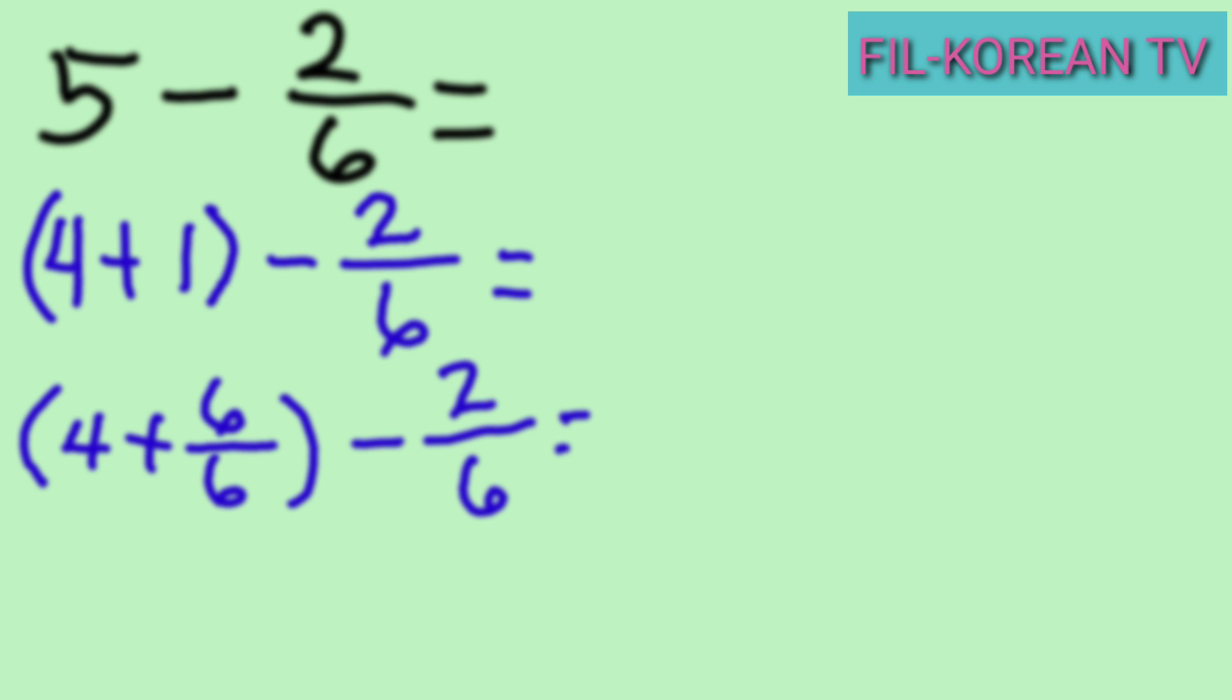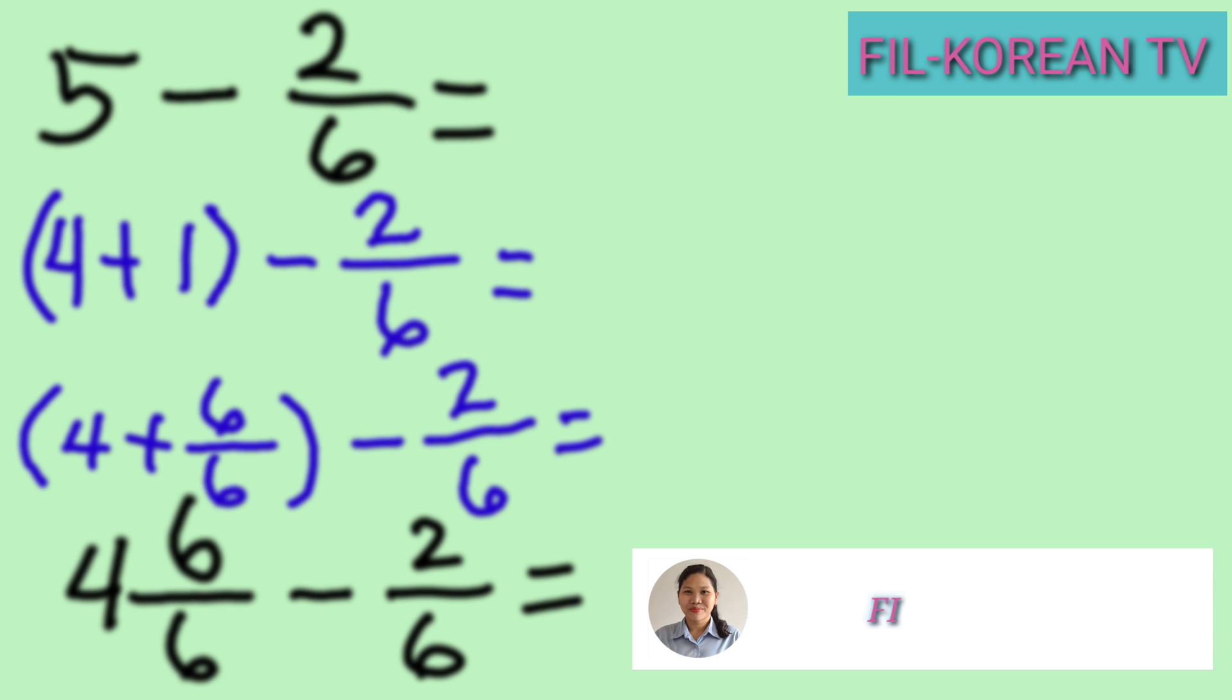Then, write the subtrahend 2 sixths. The next step, we will add 4 plus 6 sixths. So if we add 4 plus 6 sixths, the answer is 4 and 6 sixths. Then, write the subtrahend 2 sixths equals. So the whole number 5 becomes 4 and 6 sixths. It is a mixed number now, so we can subtract now.